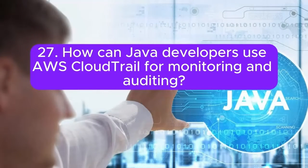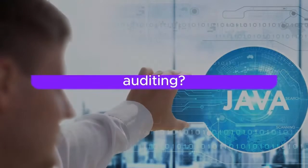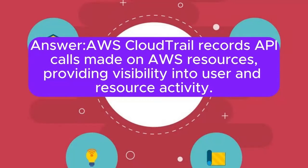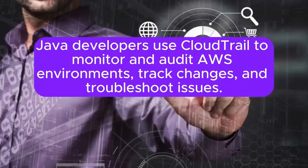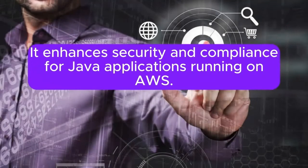Question 27: How can Java developers use AWS CloudTrail for monitoring and auditing? AWS CloudTrail records API calls made on AWS resources, providing visibility into user and resource activity. Java developers use CloudTrail to monitor and audit AWS environments, track changes, and troubleshoot issues. It enhances security and compliance for Java applications running on AWS.